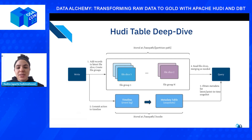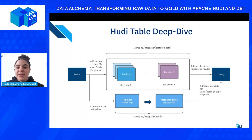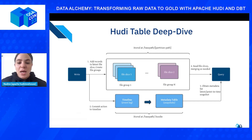Following the timeline, there is a metadata table. The metadata table is different from the timeline in that it's actually an internal merge-on-read table in the Hudi data table. The metadata table is a central place for all file metadata. When a commit happens, the metadata table gets equally updated as well. You can think of the metadata table as a big index.